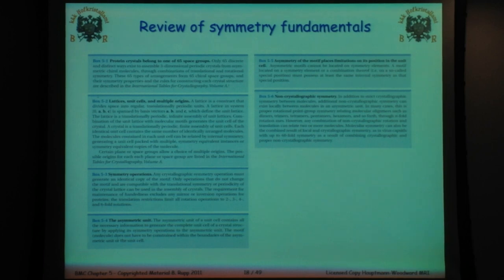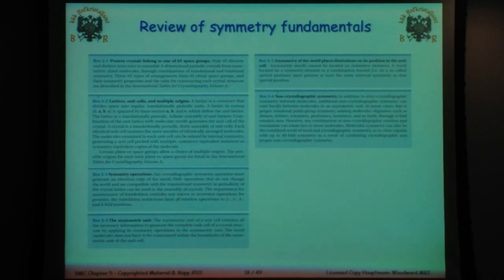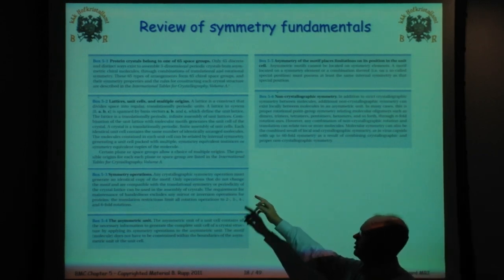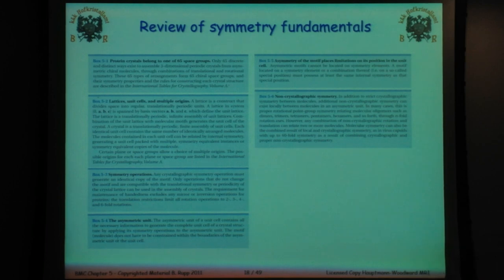A lattice divides space into regular translation of periodic units with vectors a, b, and c defining the lattice sides, plus angles alpha, beta, and gamma. The combination of the lattice with the molecular motif defines the unit cell. The combination of the unit cell with the translational symmetry elements defines the crystal. Any crystallographic symmetry operation must generate an identical property of the motif — you can't make a right-handed system left-handed, and you can't pop another protein molecule on top of the system.